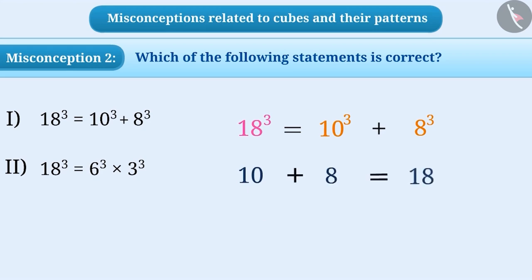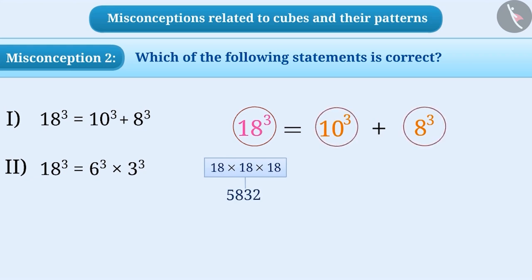If we consider the left hand side, 18 to the power of 3 can be written as 18 multiplied by 18 multiplied by 18 which equals 5832. Similarly, on the right hand side, 10 to the power of 3 equals 10 multiplied by 10 multiplied by 10 which is 1000, and 8 to the power of 3 equals 8 multiplied by 8 multiplied by 8 which is 512.